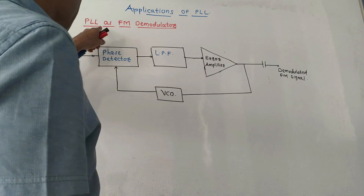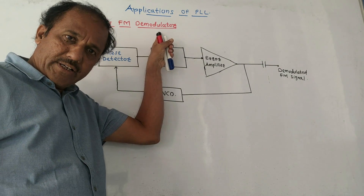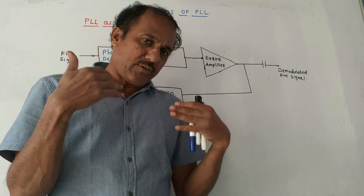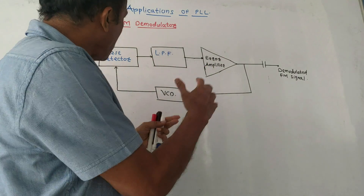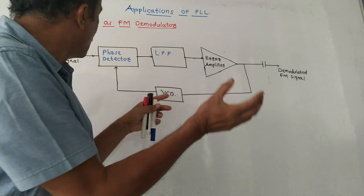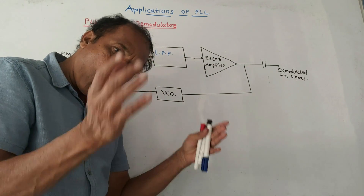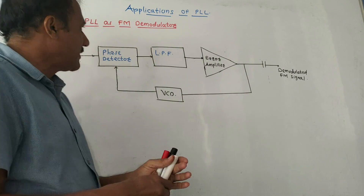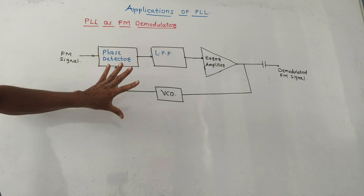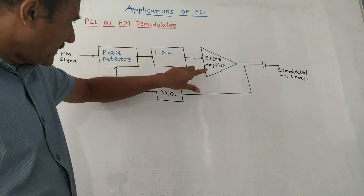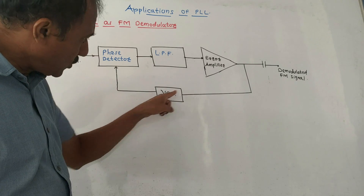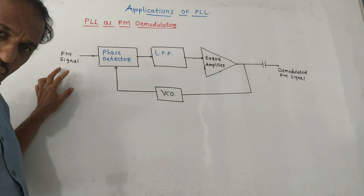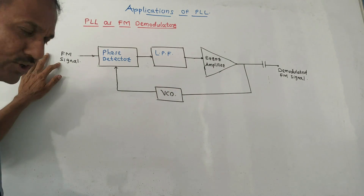The next application is PLL as an FM demodulator or FM detector. We have to draw the block diagram of an FM demodulator using PLL, showing how PLL can be used for FM detection. In this case, we are using the VCO — that is, the voltage-controlled oscillator — in the feedback path. For the phase detector there are two inputs: one is the FM signal which we have to demodulate, and the other is the output of the voltage-controlled oscillator.